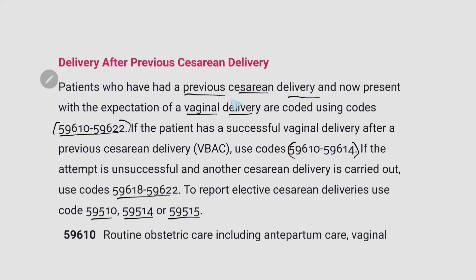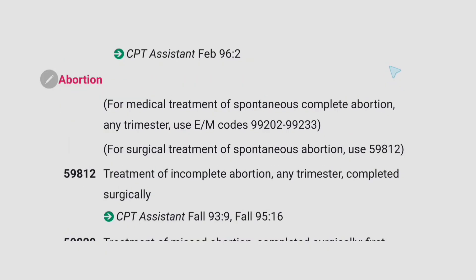To summarize this paragraph: patients who have had a previous caesarean delivery and now present with expectation of vaginal delivery — use codes from the range 59610 to 59622. If the patient has a successful vaginal delivery after previous caesarean delivery (VBAC), use codes 59610 to 59614. If the attempt is unsuccessful and another caesarean delivery is carried out, use codes 59618 to 59622. Remember that.